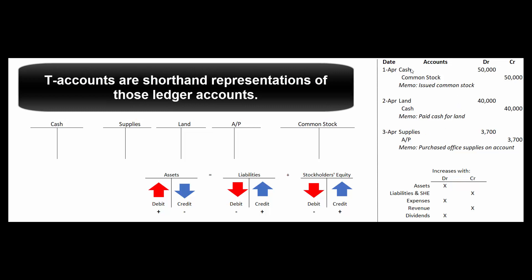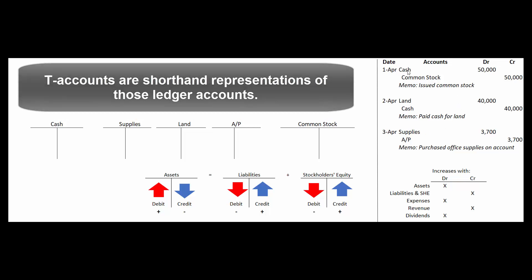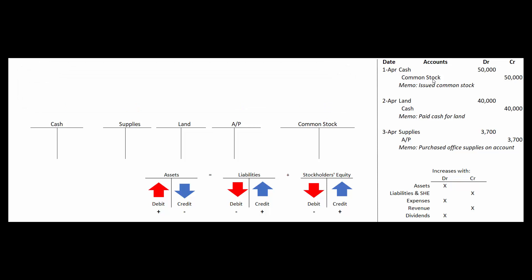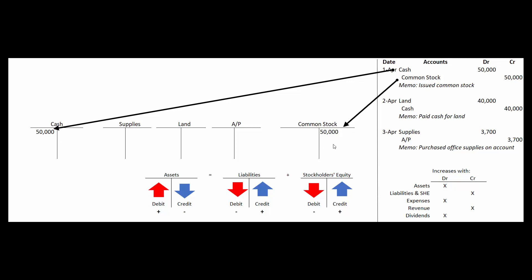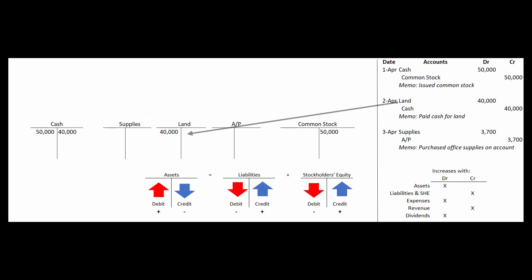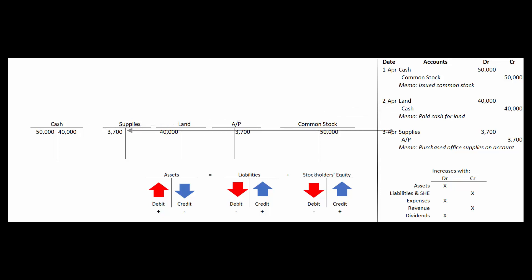Let's post the first entry: debit cash for $50,000 and credit common stock for $50,000. In T-accounts, we use the left-hand side for debits and the right-hand side for credits. Next, debit land for $40,000 and credit cash for $40,000. Finally, debit supplies for $3,700 and credit accounts payable for $3,700.